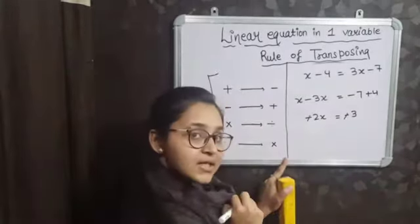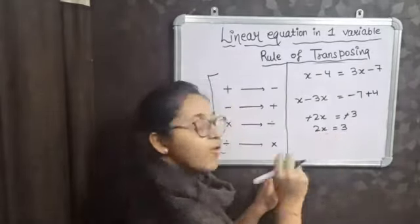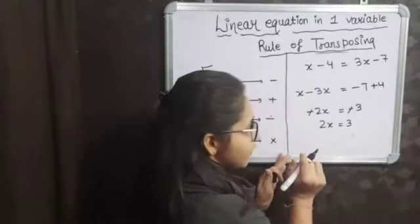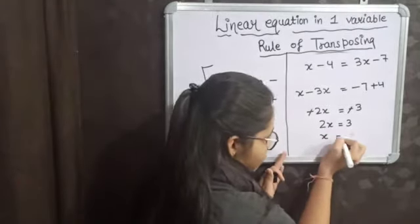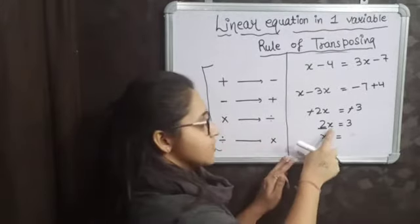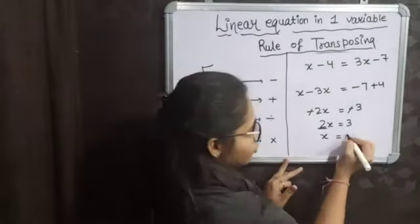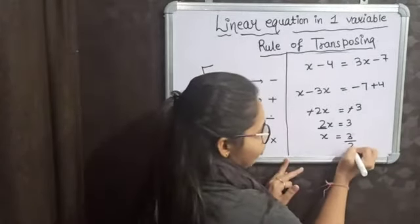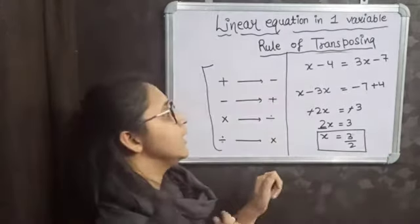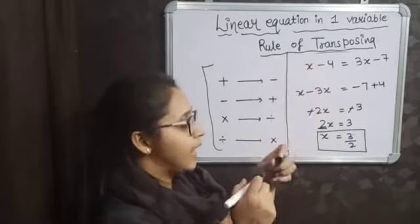Minus minus — you can cancel. So 2x is equal to 3. Now you have to find the value of only x, your variable. So 2x equals 3. Here, 2 is multiplying with x, and on the right-hand side it will become division. So x equals 3 by 2. The value of your variable is 3 by 2, meaning the solution of this equation is 3 by 2.